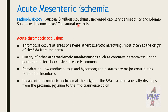In acute mesenteric ischemia pathophysiology, the first term involves mucosal venous sloughing, increased capillary permeability and edema, submucosal hemorrhage, and transmural necrosis. Acute thrombotic occlusion occurs at areas of severe atherosclerosis, most often at the origin of the superior mesenteric artery from the aorta. History of other atherosclerotic conditions such as coronary, cerebrovascular, or peripheral arterial occlusive diseases are common. Dehydration, low cardiac output, and hypercoagulable states are major contributing factors to thrombosis.